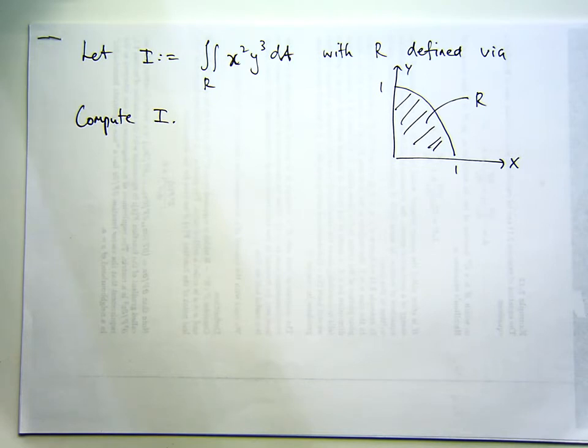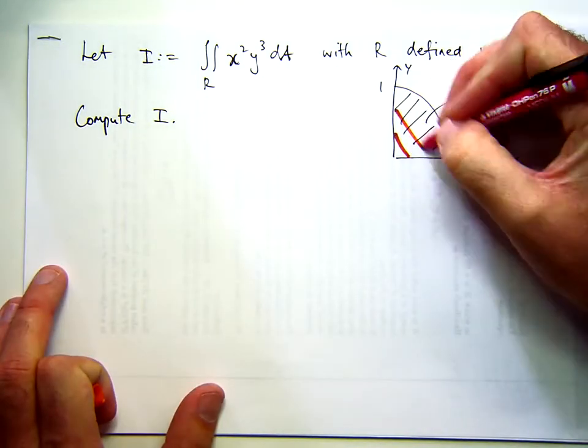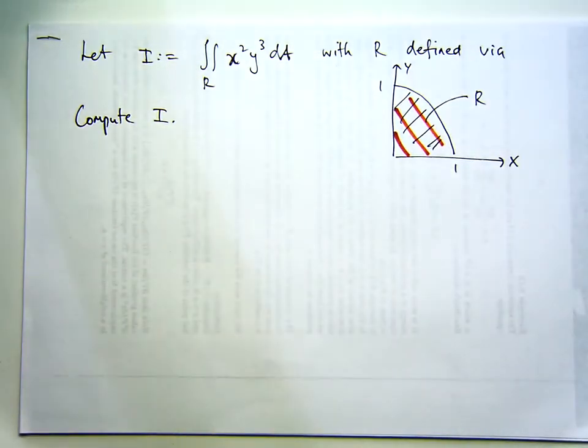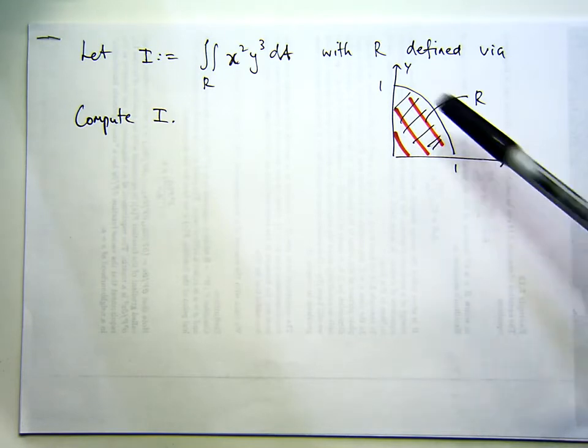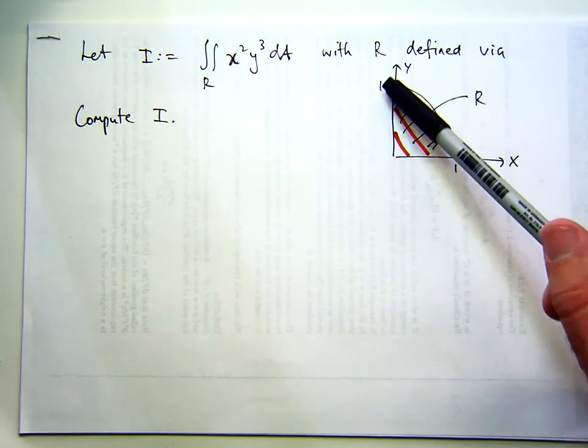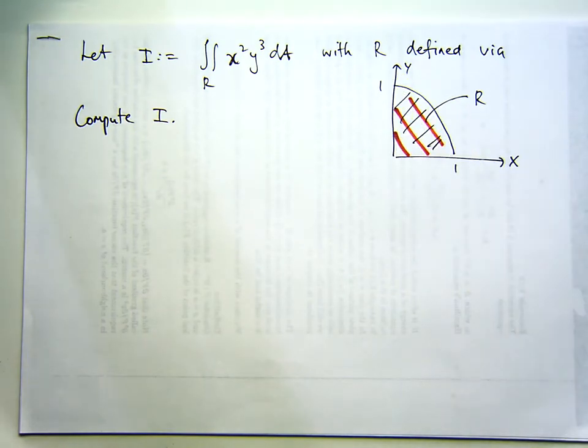From the picture you can see that the region of integration, which is a two-dimensional set, is a quarter of a disk, a badly drawn disk. Now, you could work out the equation for this edge and this edge and this edge and then do it in a Cartesian style.